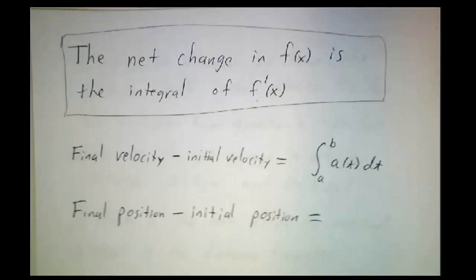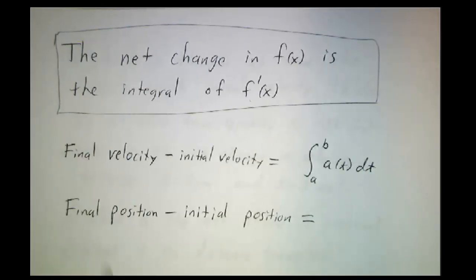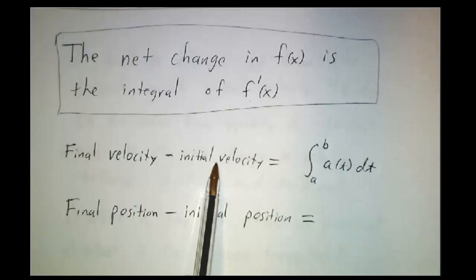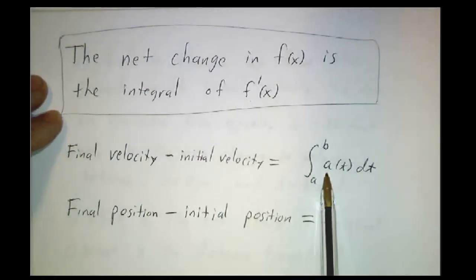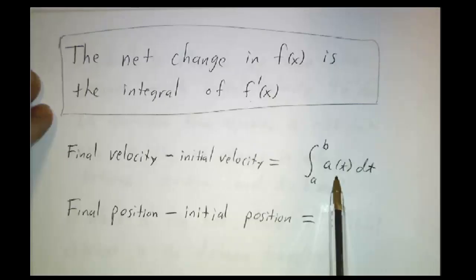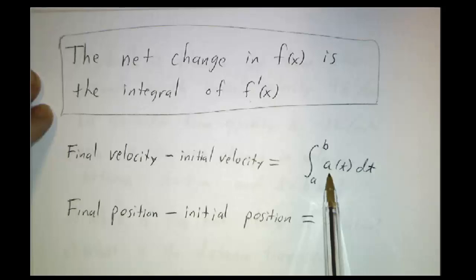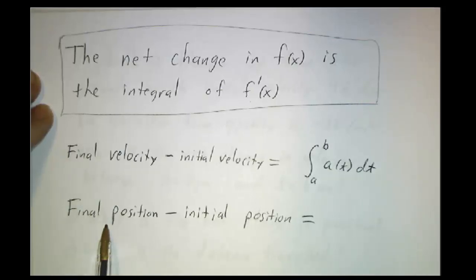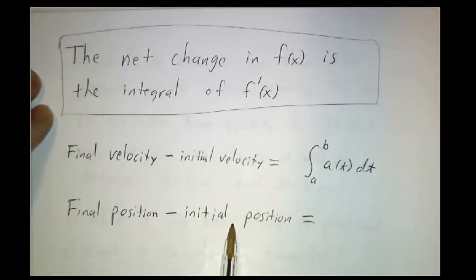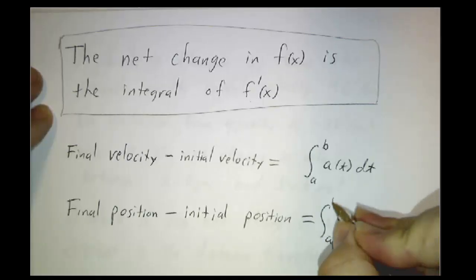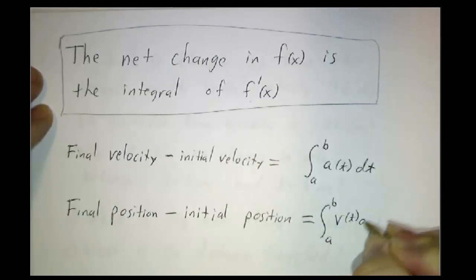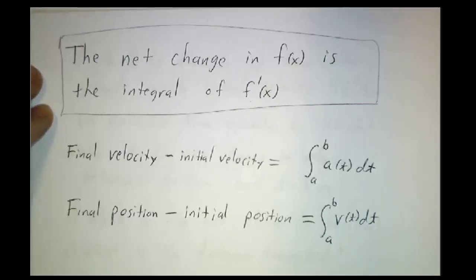For example, if your function represents velocity and you want the net change in velocity — final minus initial — that's the integral of the derivative of velocity, otherwise known as acceleration. If you know the acceleration, integrate it and you get the change in velocity. Similarly, if you want the final position minus the initial position — the net displacement — you integrate the derivative of position, which is velocity. All these net changes are given by integrals of derivatives.